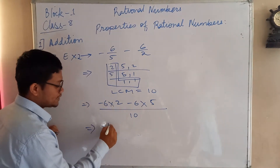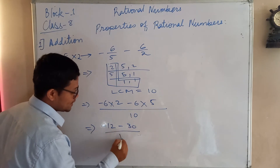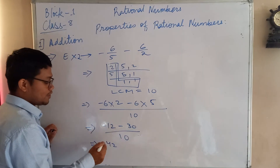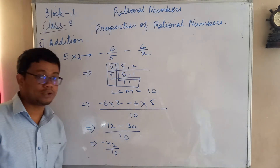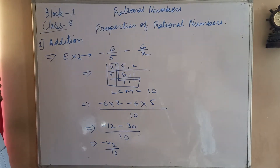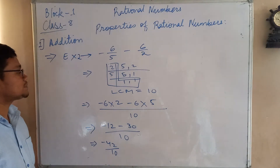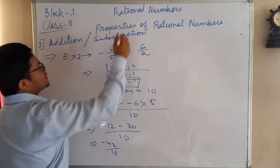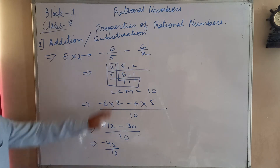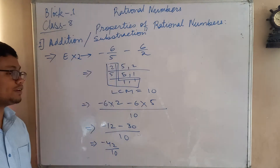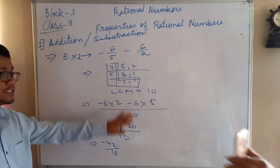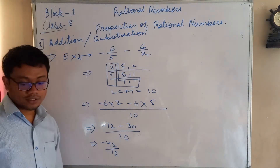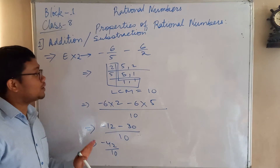The answer should be minus 12 minus 30 by 10. Now solve this as integers — minus minus means you add, so 12 + 30 = 42. Since 30 is bigger than 12, put a minus sign, giving minus 42 divided by 10. You can bring this into standard form or leave it as is. Addition and subtraction are kind of similar — using a minus sign doesn't change the method; just solve it in integer format and follow the steps.